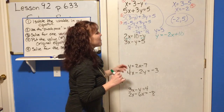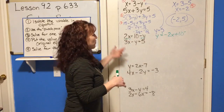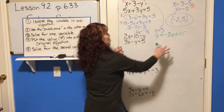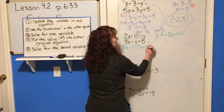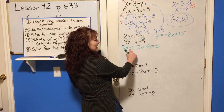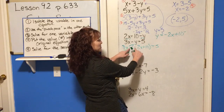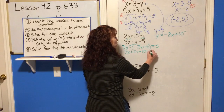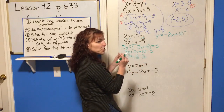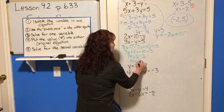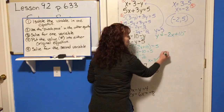Now plug that as our puzzle piece into the other equation — make sure you put it into the other equation, not the same one. So: 3x minus (negative 2x plus 10) equals 5. Distribute the negative through: 3x plus 2x minus 10 equals 5. Combine: 5x minus 10 equals 5. Add 10 to both sides: 5x equals 15. Divide by 5: x equals 3.